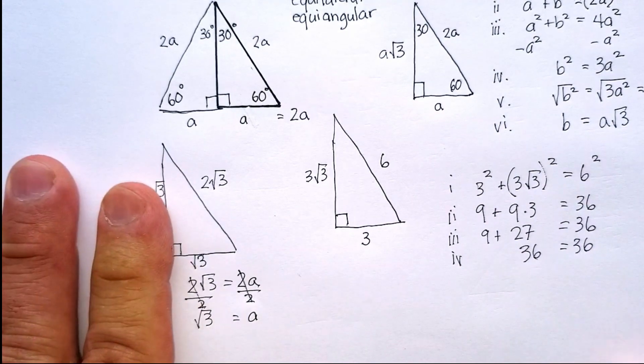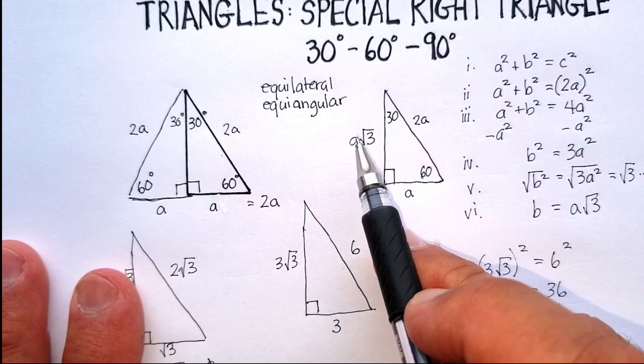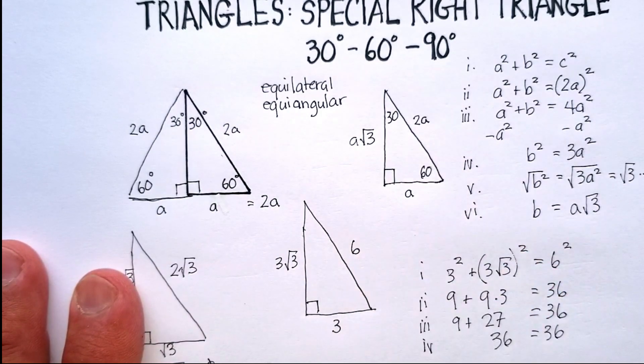30, 60, 90 degree triangles are great. Just memorize this formula, and you should be all set.